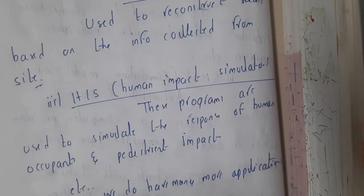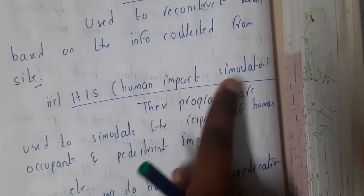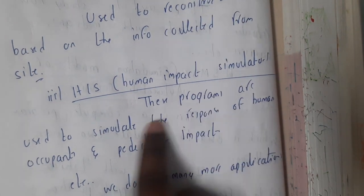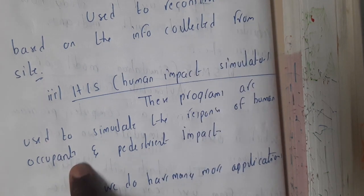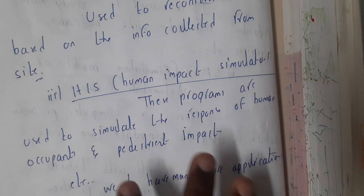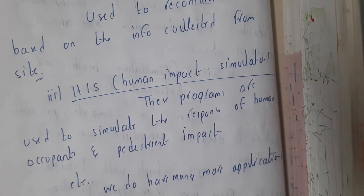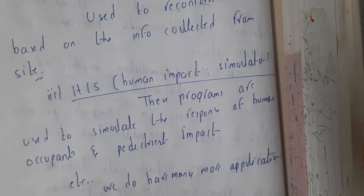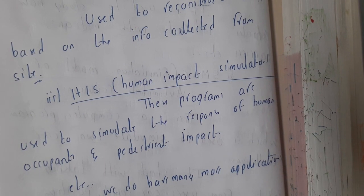The last method is HIS — Human Impact Simulator. These programs are used to model and maintain the response of a human body in a collision. There are many more applications beyond these, but for examination purposes, these programs — HVOSM, SMAC, CRASH, and HIS — should be sufficient.